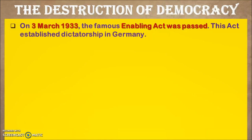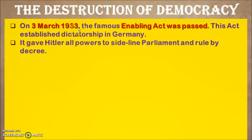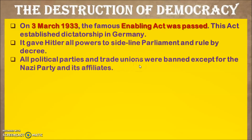On 3rd March 1933, the famous Enabling Act was passed — a very important event in this history. This act established a dictatorship in Germany. It gave Hitler all powers to sideline Parliament and rule by decree. All political parties and trade unions were banned, except for the Nazi Party and its affiliates.